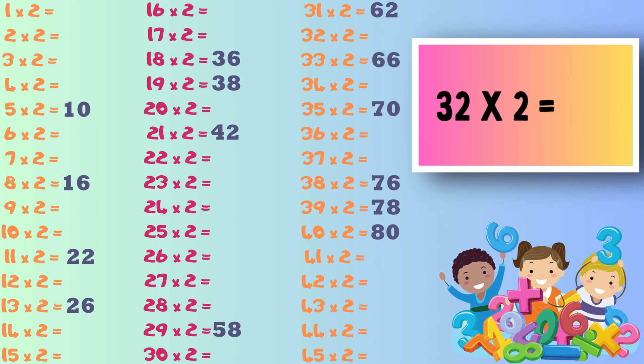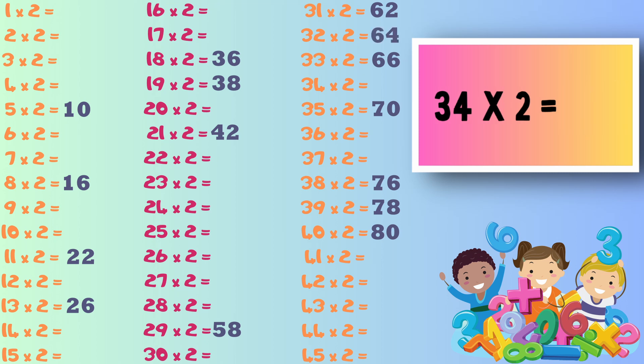Now it's 33 times 2 and the answer to this one is 66. Next it's 32 times 2, the answer is 64. Next up it's 34 times 2 and the answer to this one is 68.